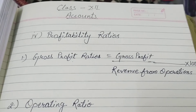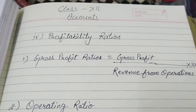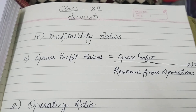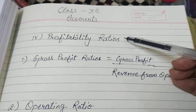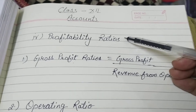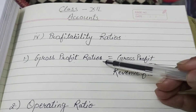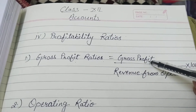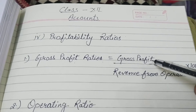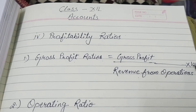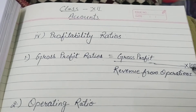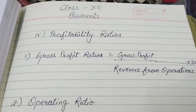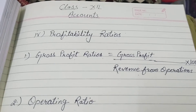Good morning students, welcome back to the accountancy classes. Today we will start with another topic. In the previous lecture we covered the profitability ratio. We talked about the gross profit ratio — the formula for that is gross profit upon revenue from operations, multiplied by 100, because it comes out as a percentage.